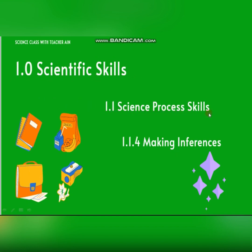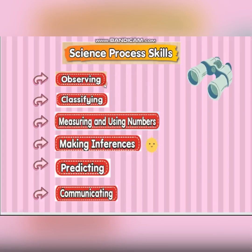In this scientific unit we are going to learn about Science Process Skills. For today, we are going to learn about making inferences. There are six Science Process Skills in Year 3, which are: observing, classifying, measuring and using numbers, making inferences, predicting, and communicating. Today we are going to focus on making inferences.